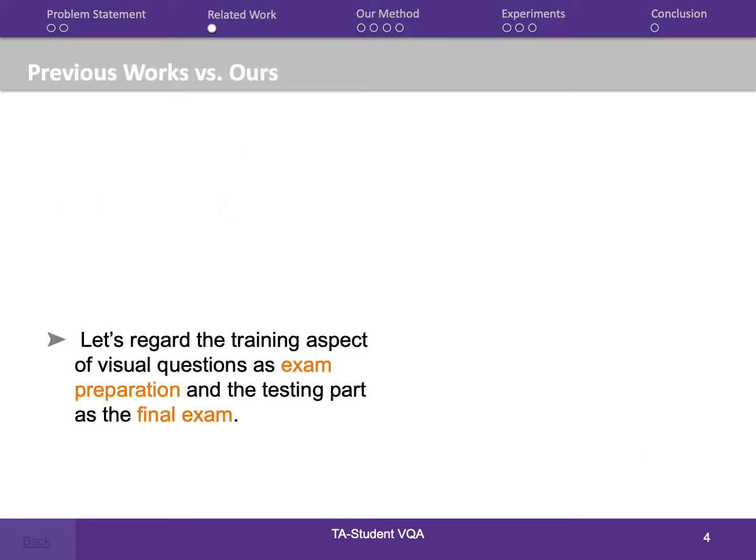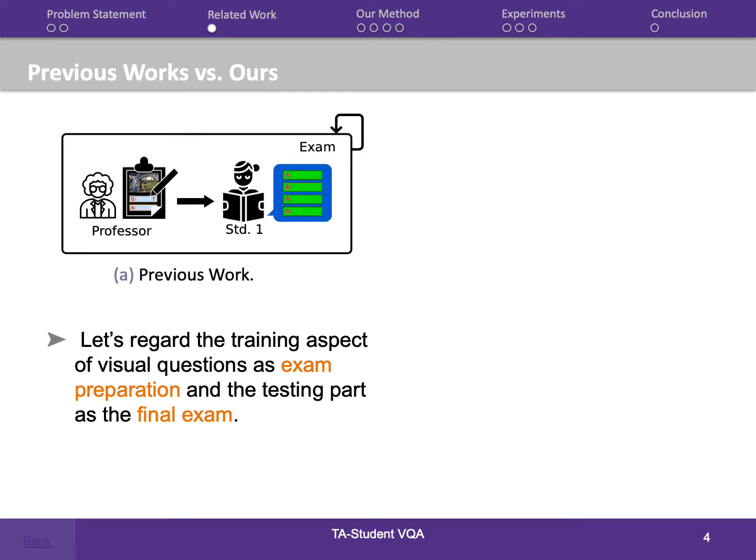Let's first regard the training aspect of visual question answering as exam preparation, and the testing part as the final exam. Previous work used annotated data to train one model and update parameters using the result — similar to when a student prepares for an exam alone. The student can only improve by taking the exam. However, empirically, the exam questions are limited, which leads to difficulty in reinforcing learning and lack of generalization.